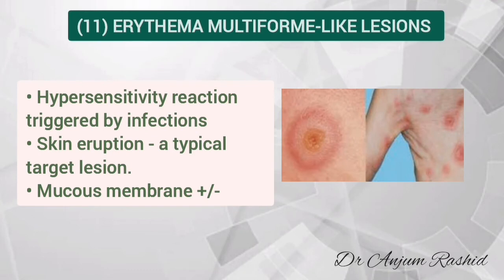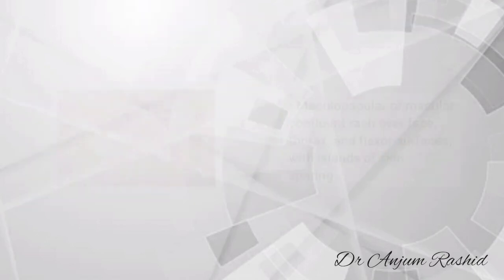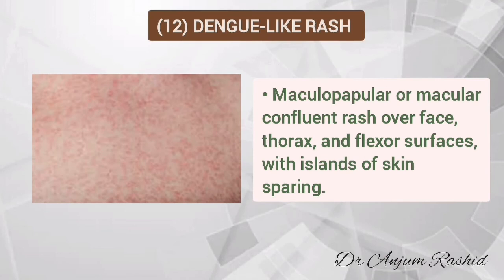Another rare cutaneous manifestation in COVID patients is erythema multiforme-like lesions. This is a hypersensitivity reaction usually triggered by infections, characterized by a skin eruption with typical target lesions. Mucous membranes may be involved in these cases. A few COVID patients have also presented with a dengue-like rash.